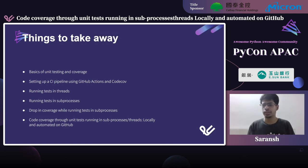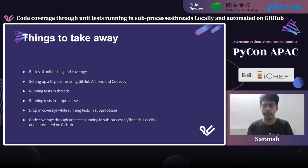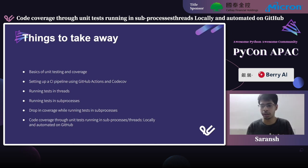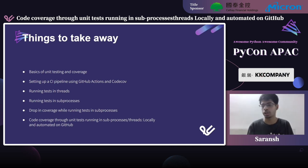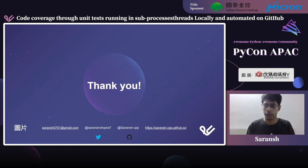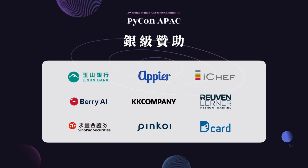Summarizing this talk: we went through basics of unit testing and coverage, then set up a CI pipeline using GitHub Actions and Codecov to automate everything. We ran tests in threads — everything worked. We ran tests in subprocesses — coverage started failing. Coverage.py's documentation was very helpful. We saw the drop in coverage while running tests in subprocesses, and then went through two fixes. In the end everything worked — your coverage will always be correct. These are my contact links if you want to get in touch. Thanks!